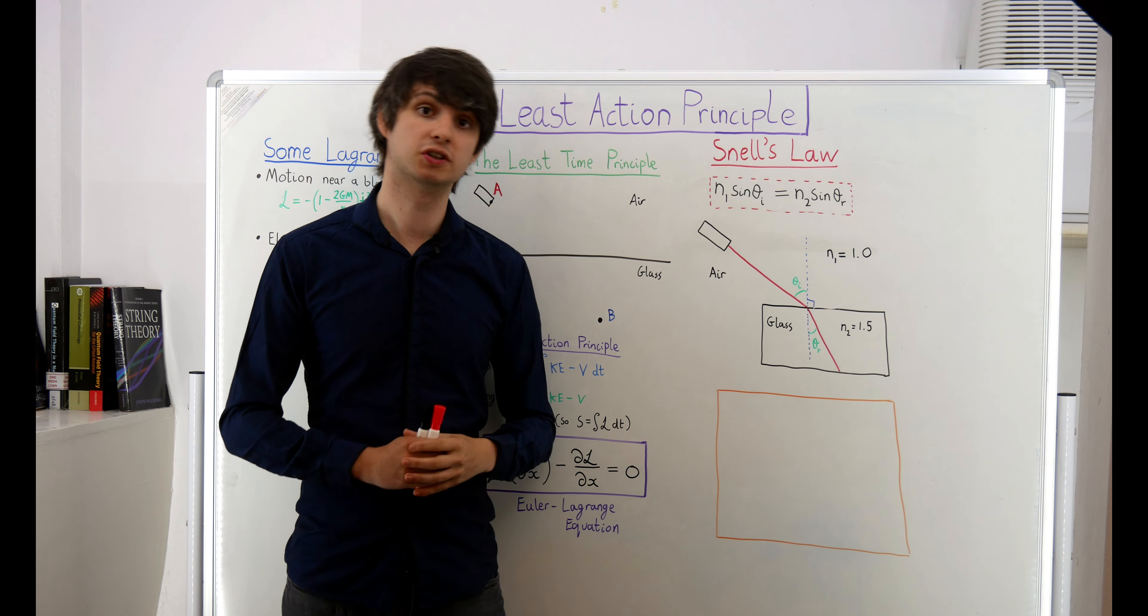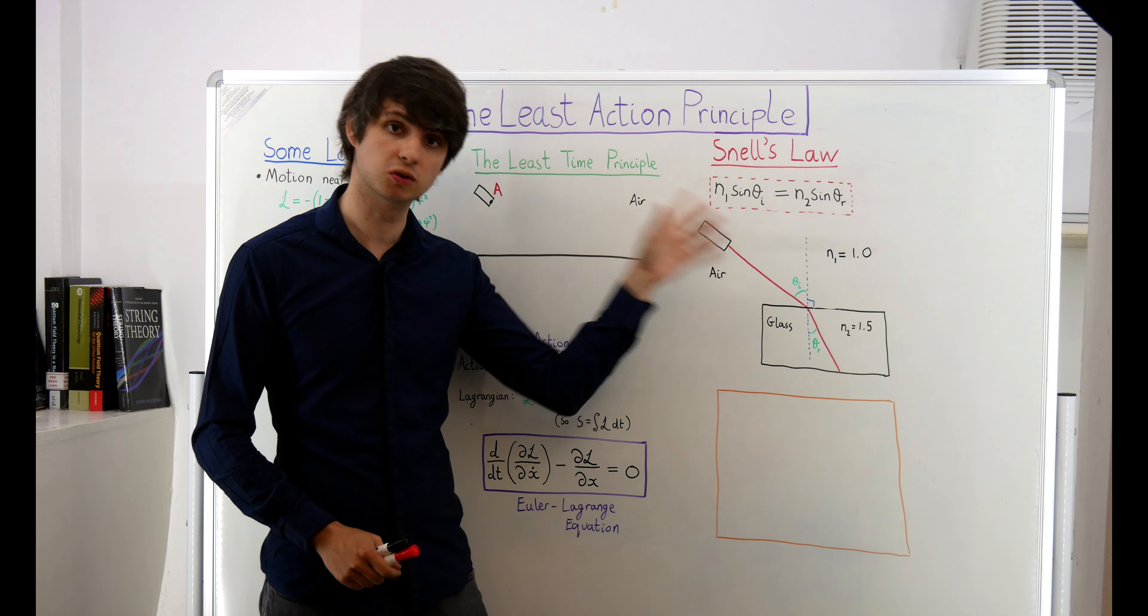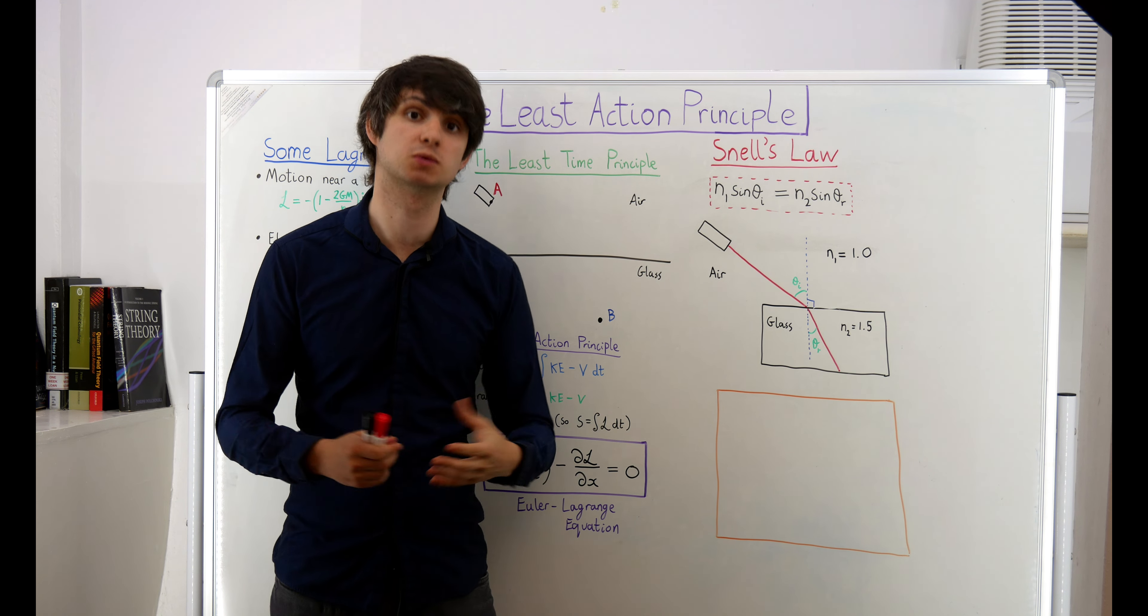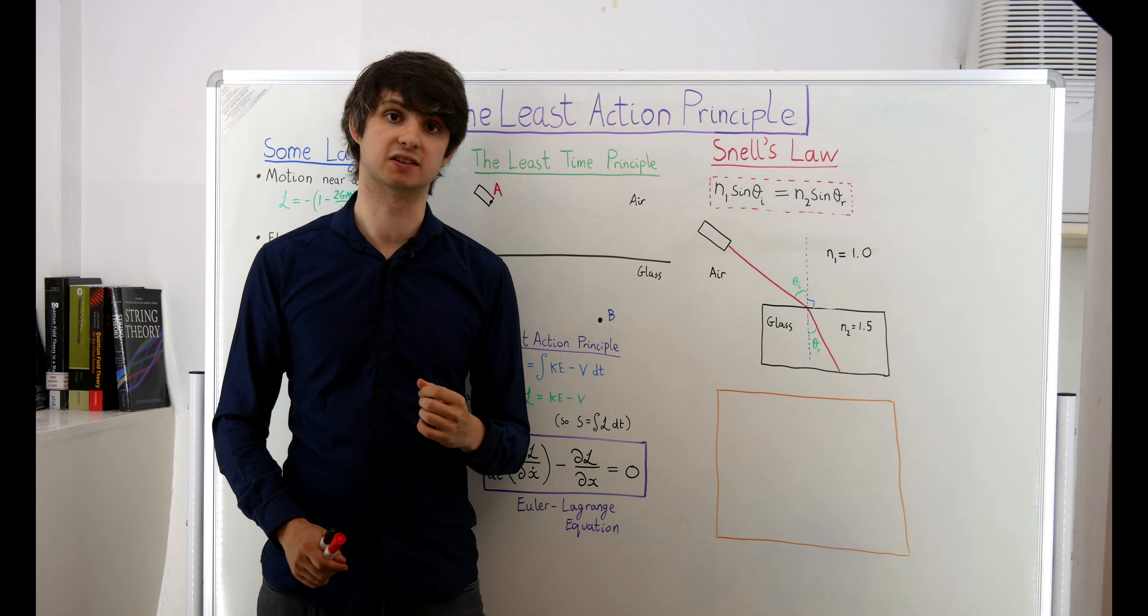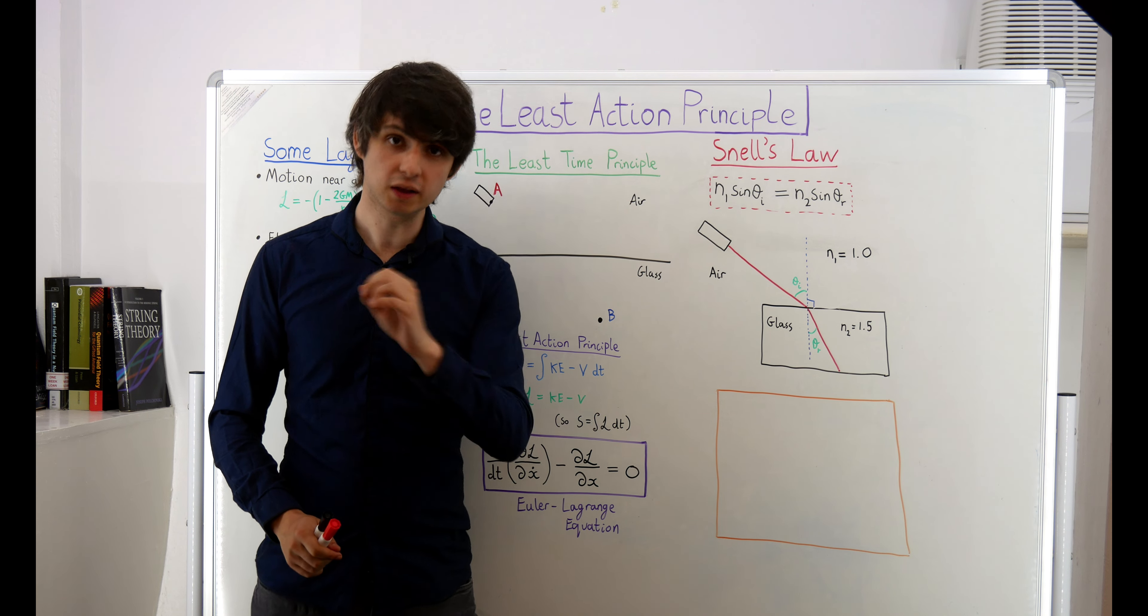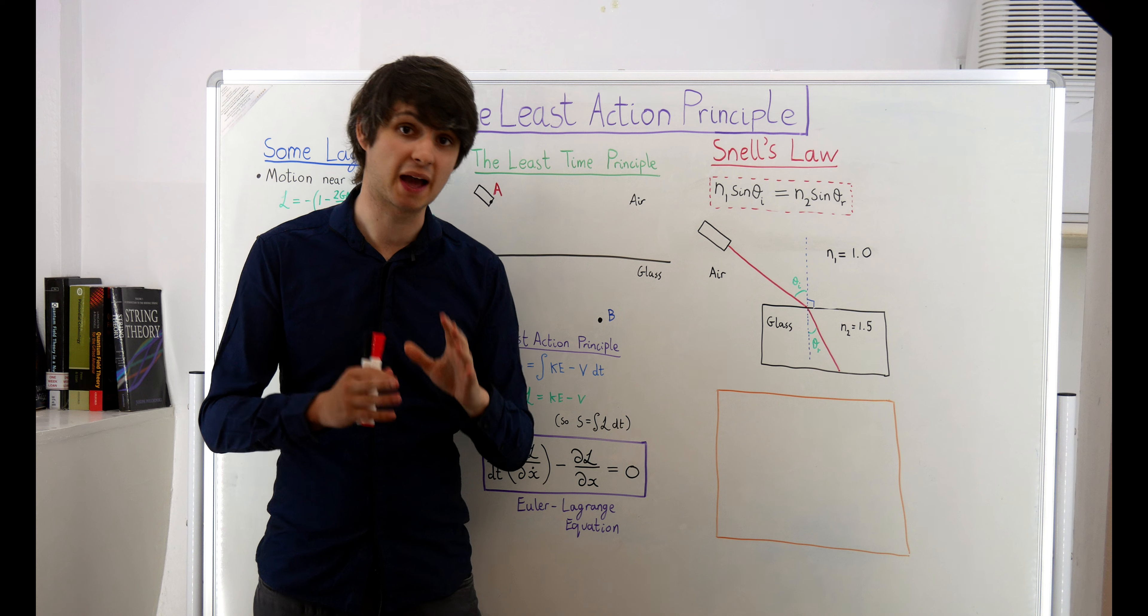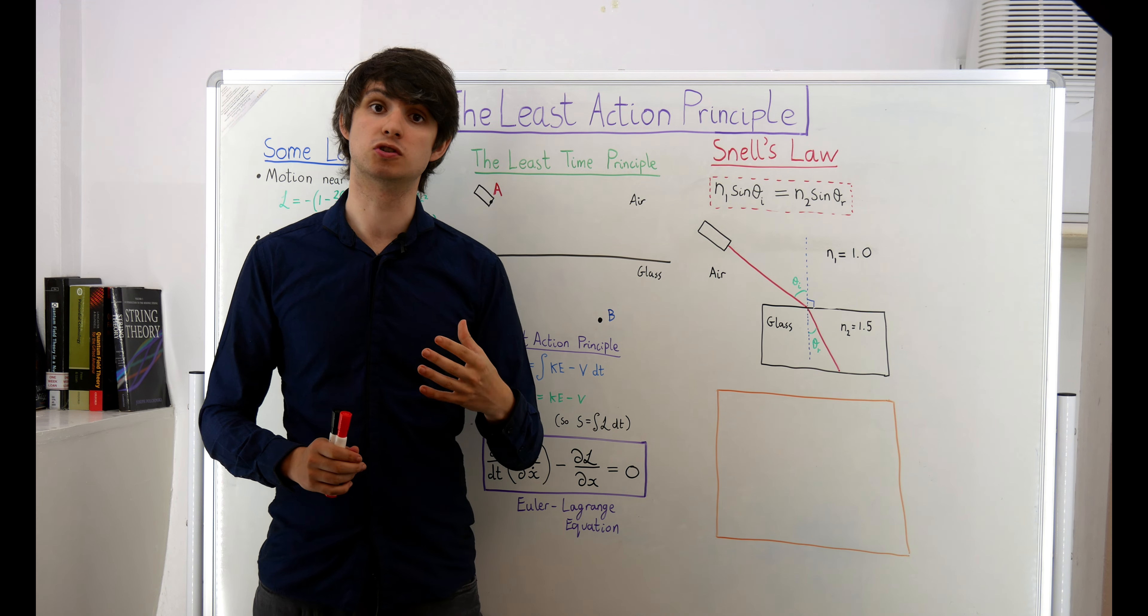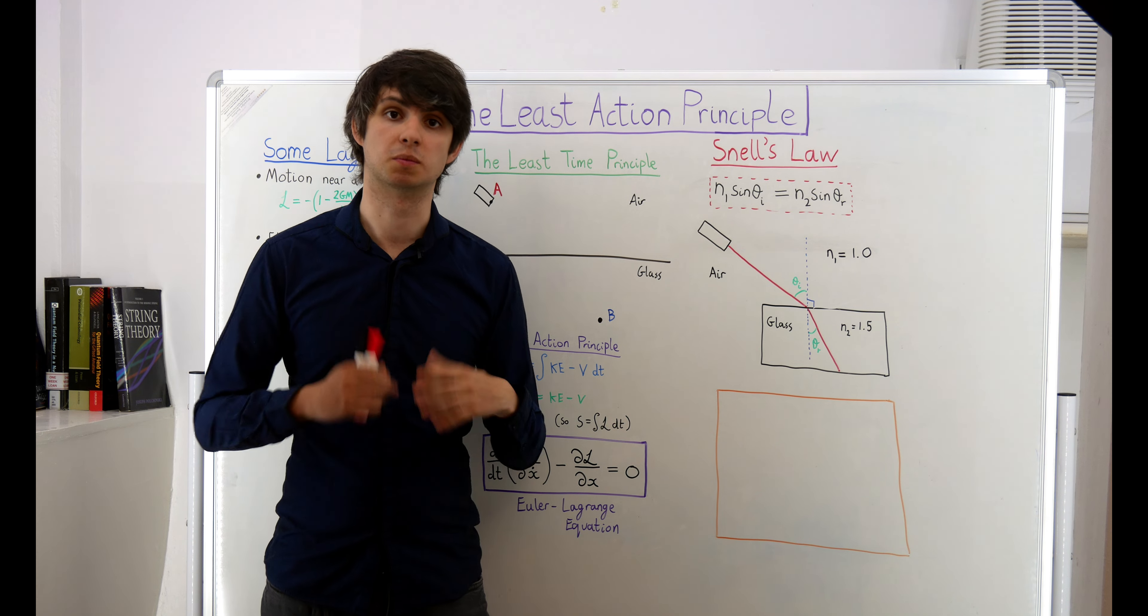It wasn't until the 17th century that theoretical arguments involving physical concepts were used to actually prove this relationship. Now, there are several different ways that you can prove Snell's law. You can use energy and momentum conservation, or you can use Maxwell's equations of electromagnetism. The way that we'll be concerned with, however, which is perhaps the most striking one, uses a principle introduced by the legendary mathematician Pierre de Fermat.